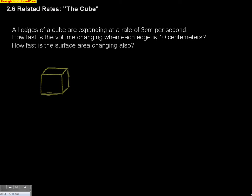As you can see here, it says all edges of a cube are expanding at a rate of 3 centimeters per second. So the sides of this thing are expanding this way. So the sides are getting bigger, which would mean that the volume is going to get bigger as well.